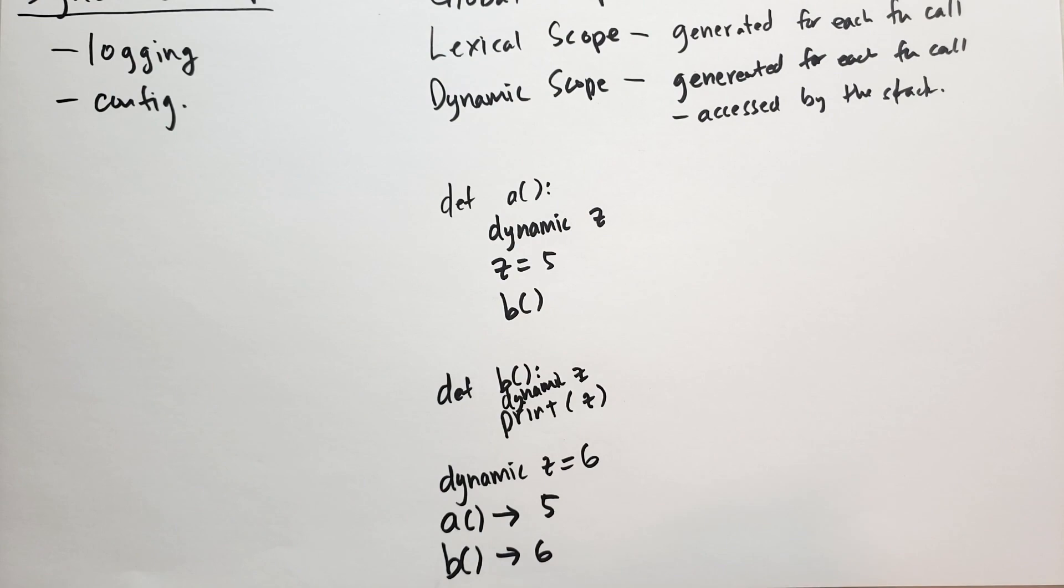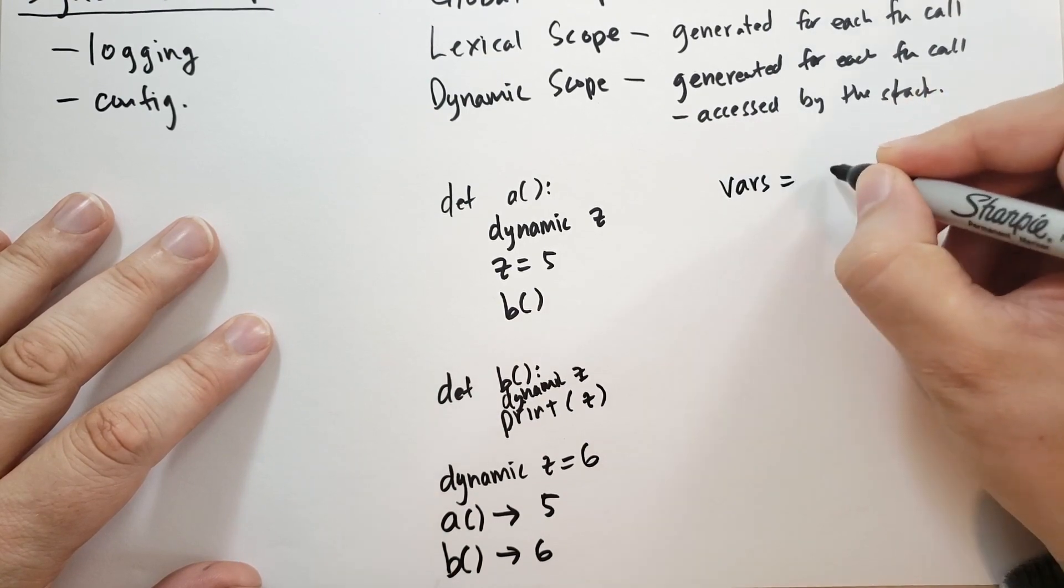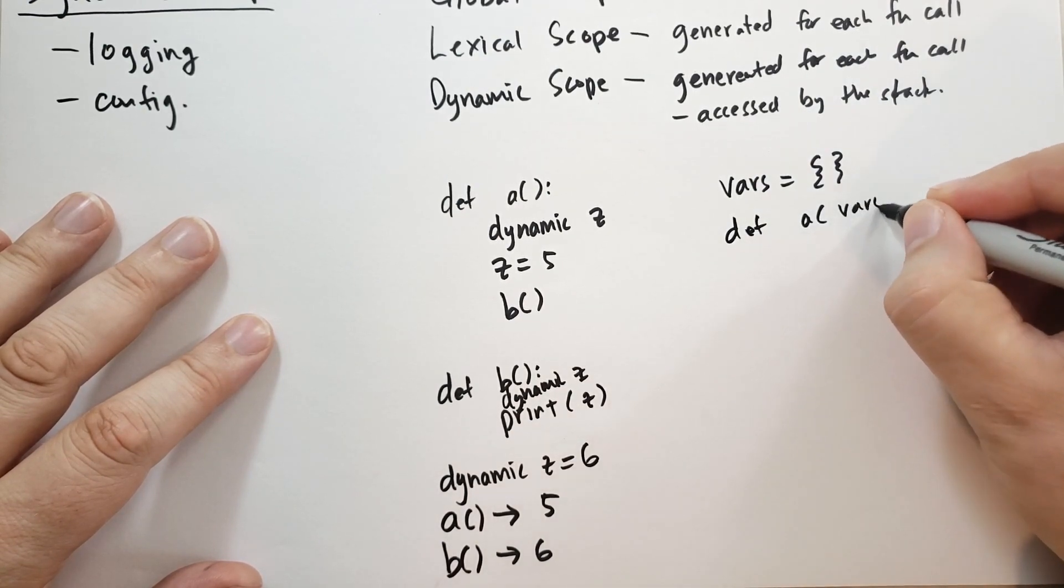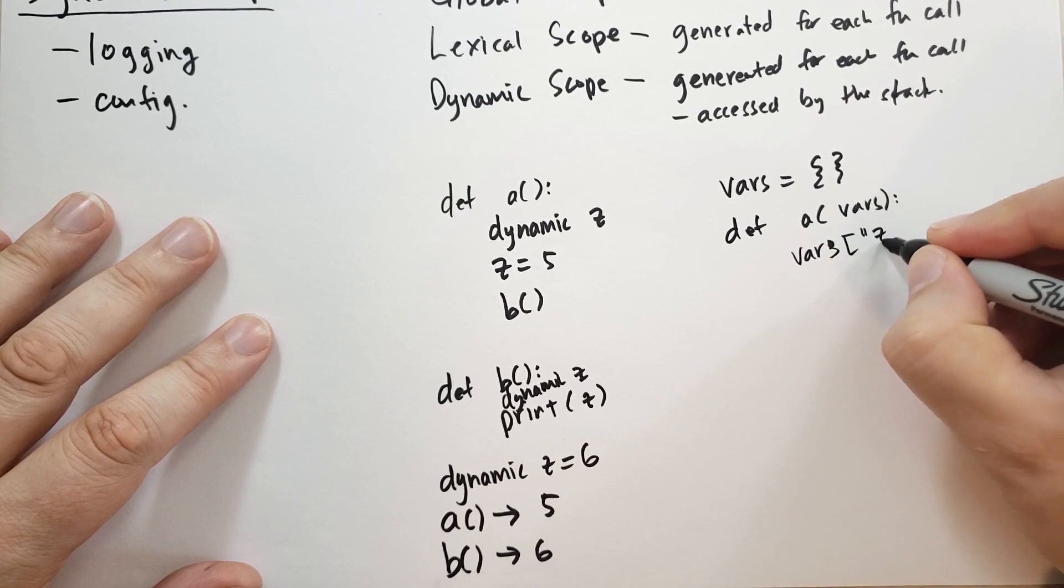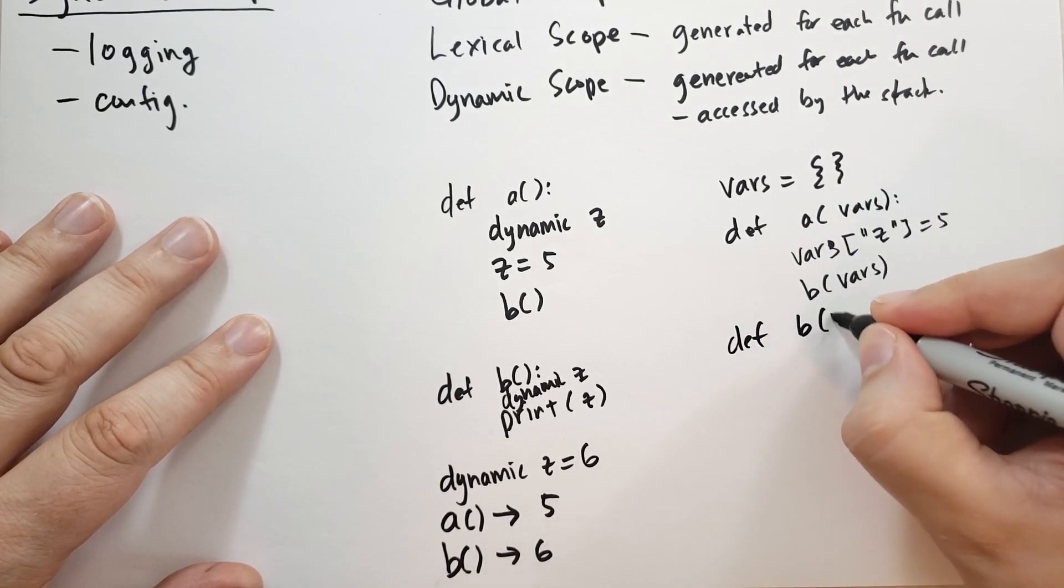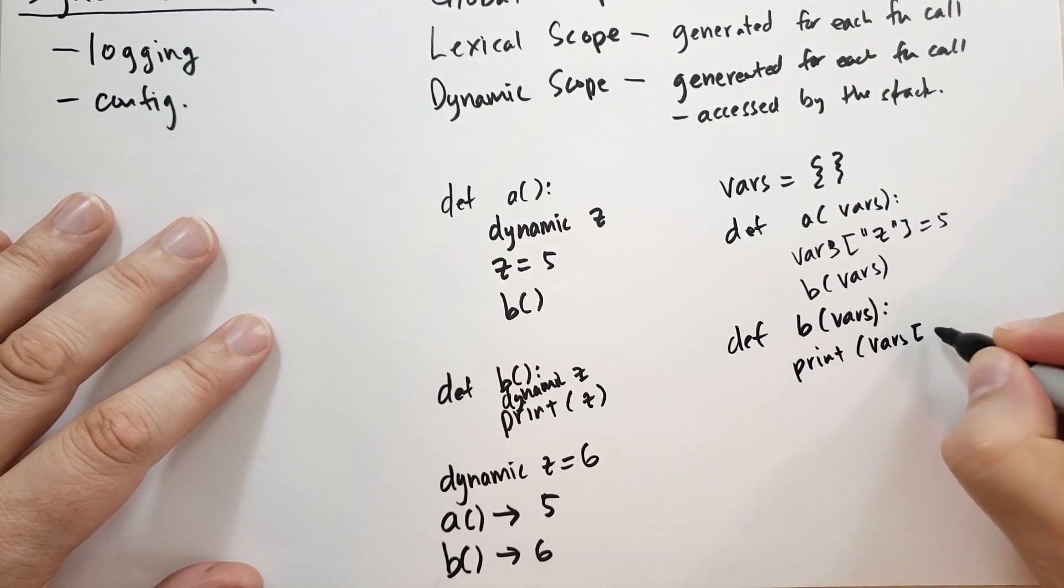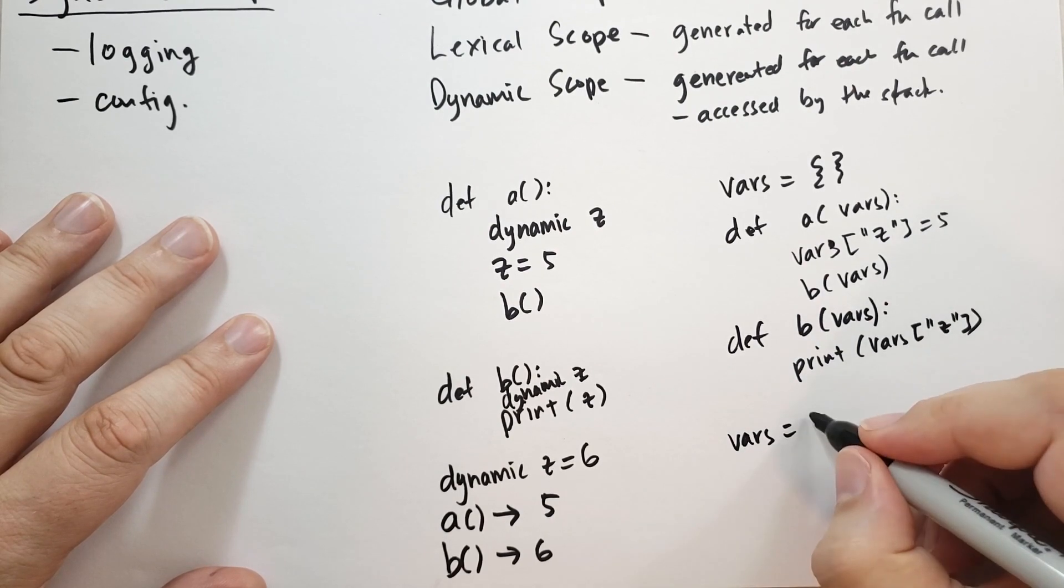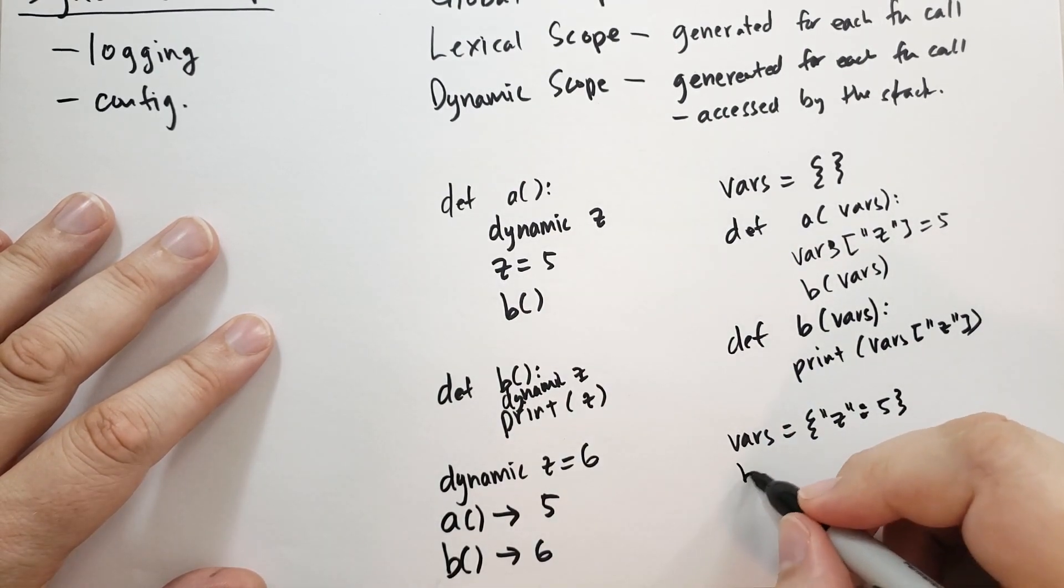Now, there is a way in Python to simulate dynamic scope. Basically, the way you simulate dynamic scope is you have a set of variables that's going to be a dictionary. We haven't talked about dictionaries yet. And you pass that into each function call. So I'll give you an example here. So vars, and I'm using syntax that you're not familiar with yet, so don't panic if you don't know what this means. And then def b also accepts vars, and it's going to print vars z. And then when you're calling it, you set your vars equals to z colon 5.